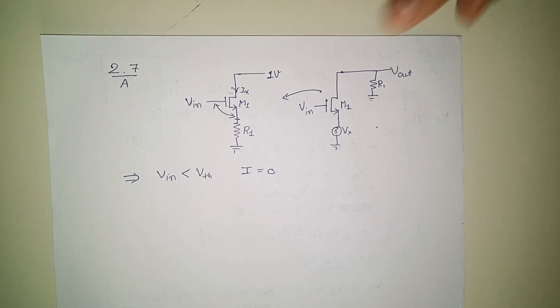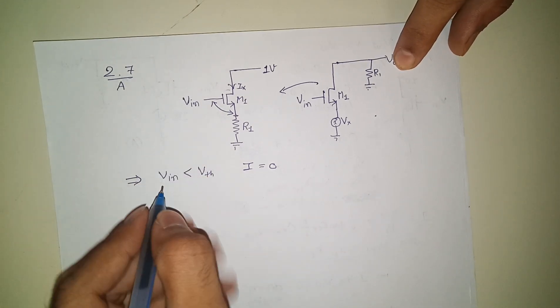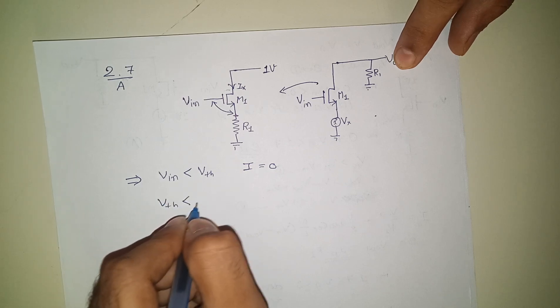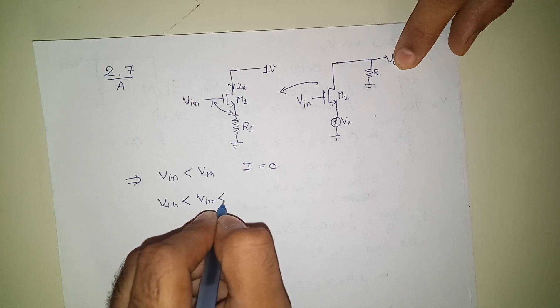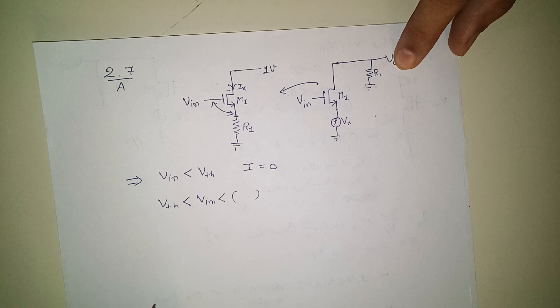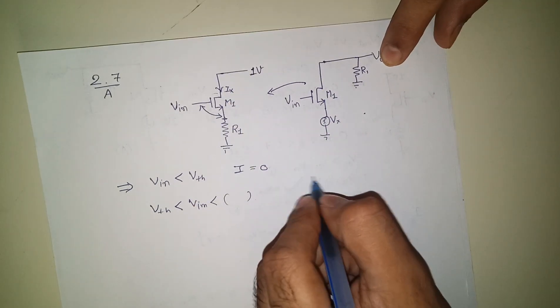From V_th greater than V_e to some point, we will see that this device will be in saturation because it will fulfill... Let me see, this is V_out, right?